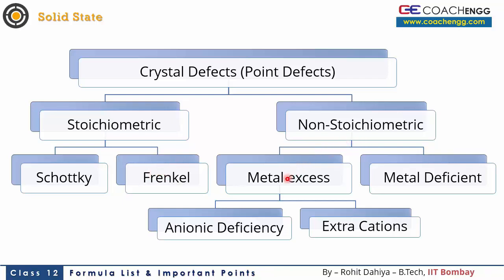In the Frenkel defect, an ion leaves its position and moves to an interstitial void. In the Schottky defect, the density of the compound decreases because some anions and cations are missing from the given volume. In the Frenkel defect, only the location changes, so the overall density remains the same. In non-stoichiometric defects, there are two types: metal excess and metal deficient. Metal excess has two causes: anionic deficiency and extra cations. In anionic deficiency, an anion moves out of the crystal and leaves its electron behind, keeping the substance overall neutral.